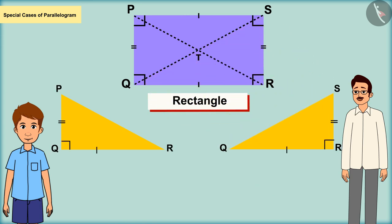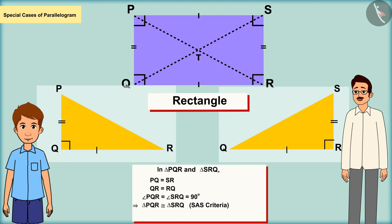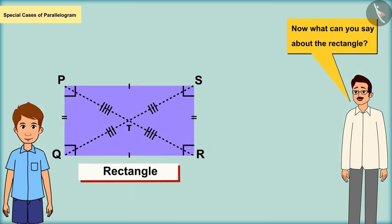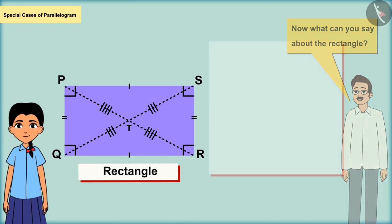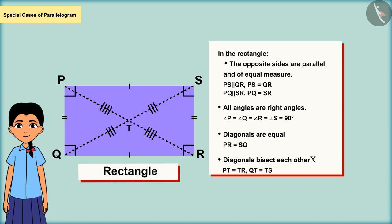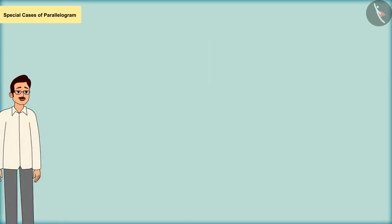If we draw the triangles PQR and SRQ appearing in this rectangle separately on another paper and observe, you can see that both triangles are congruent, with the help of which we can say that both diagonals of the rectangle are of equal measure. So the rectangle is a parallelogram whose all angles are right angles, the diagonals are of equal measure, and the diagonals bisect each other.